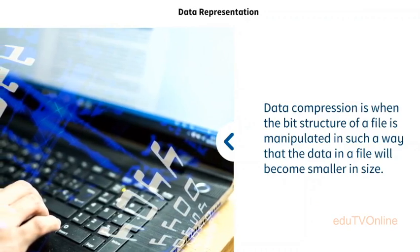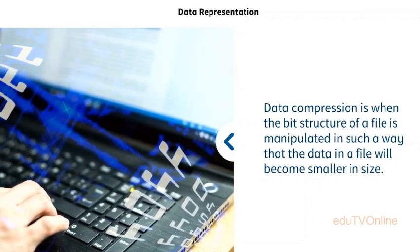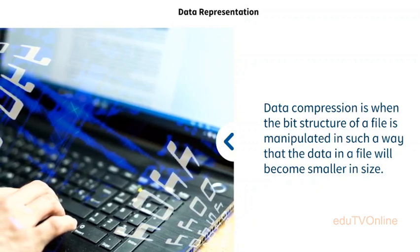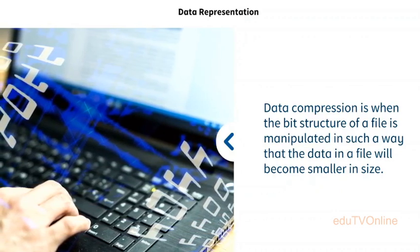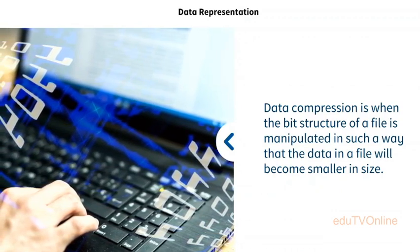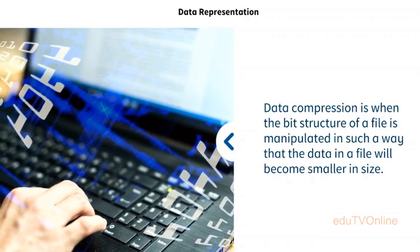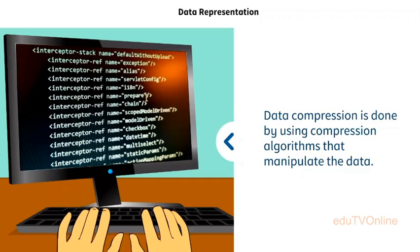Data compression is when the bit structure of a file is manipulated in such a way that the data in the file becomes smaller in size. This means that less storage space is needed to store the file, and the file will be easier to transmit from one device to another. Data compression is done using compression algorithms that manipulate the data so that repeating data is removed, either on a temporary or permanent basis depending on the method used.